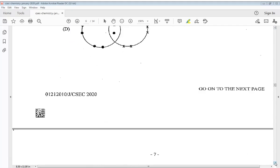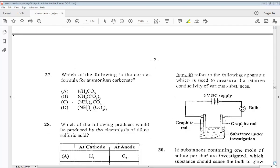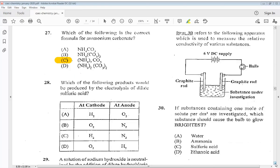Let's go to number 27. Which of the following is the correct formula for ammonium carbonate? C. 28 says which of the following products would be produced by the electrolysis of dilute sulfuric acid? So we know it is A.